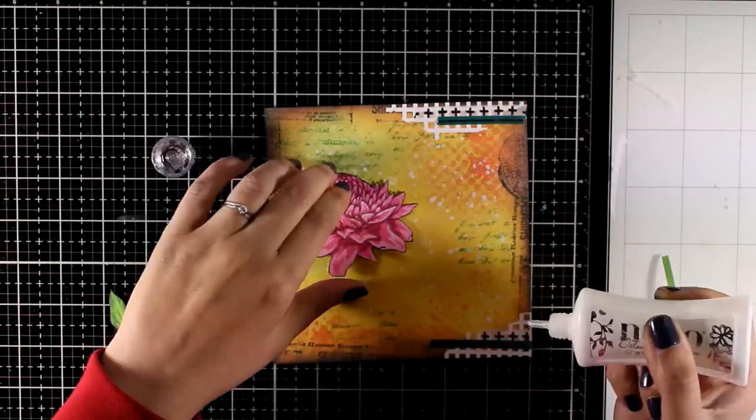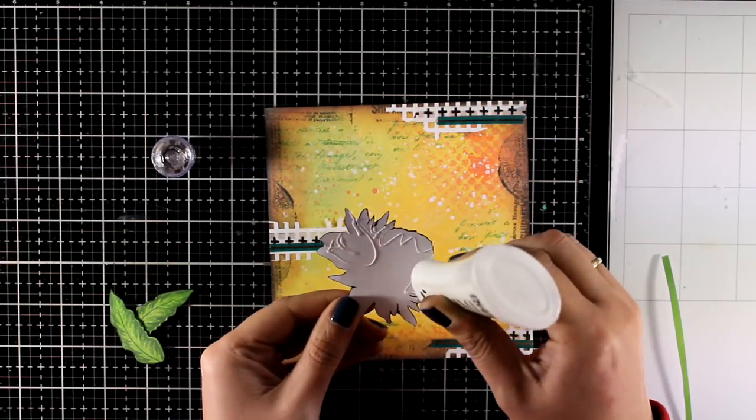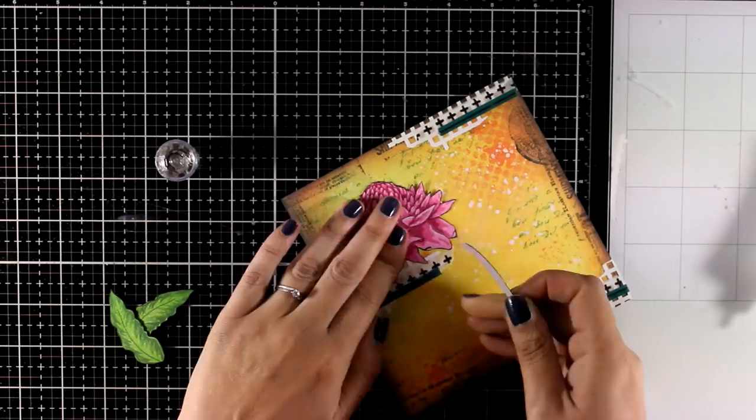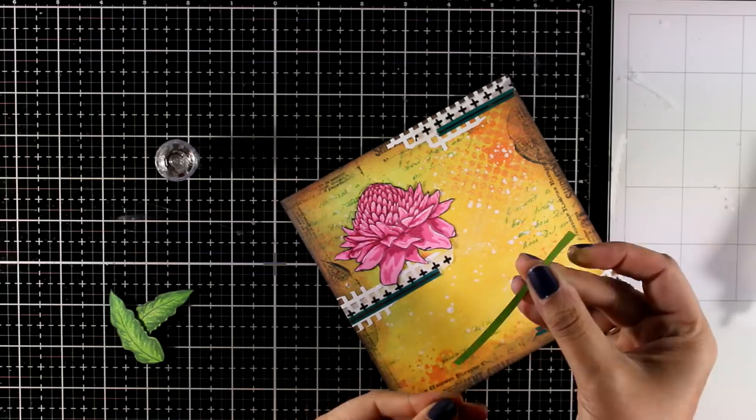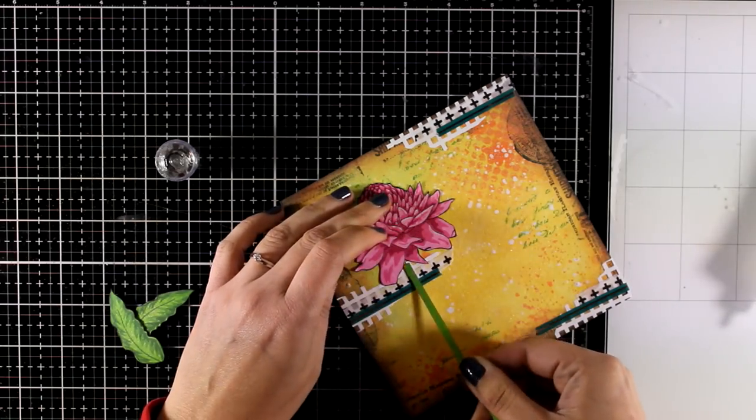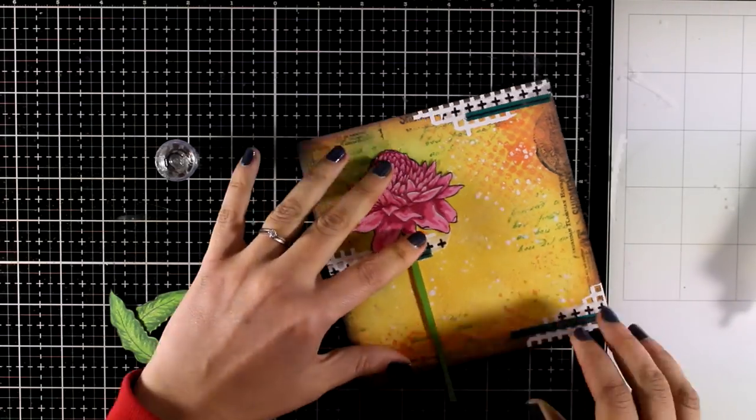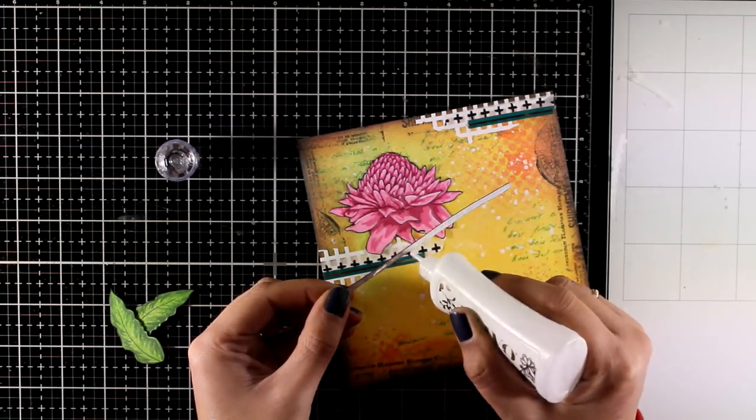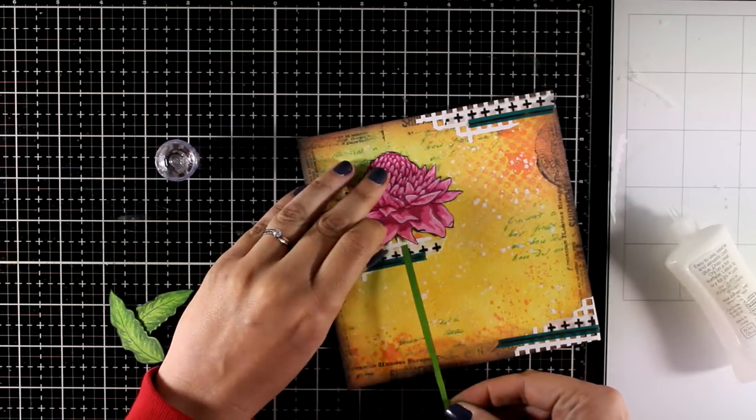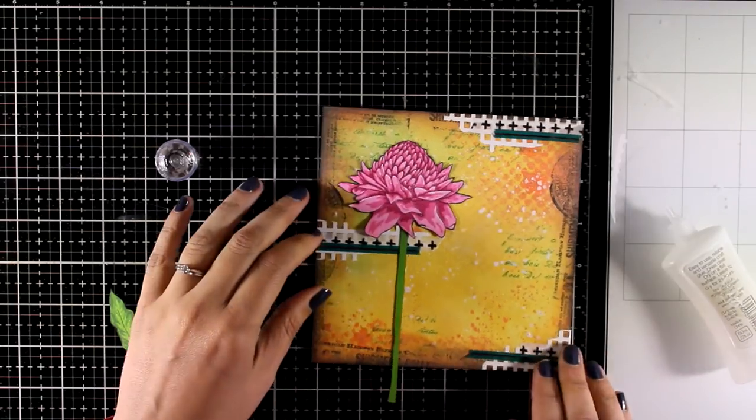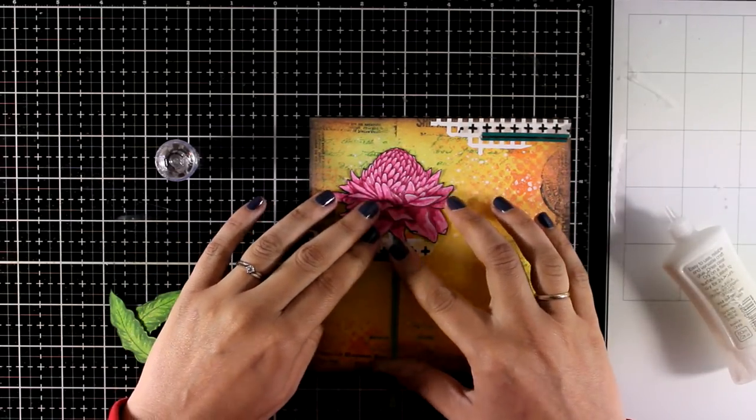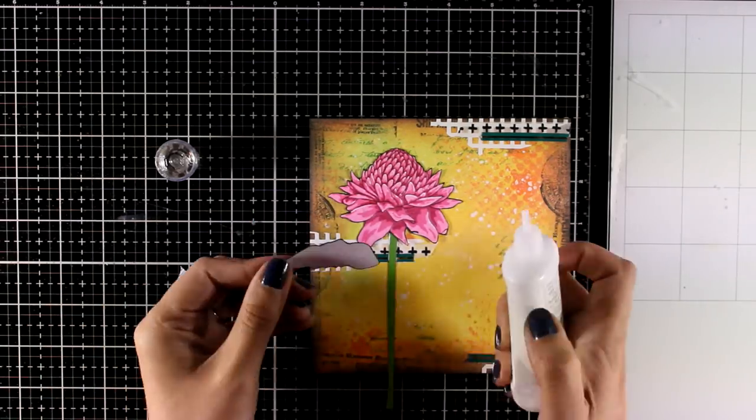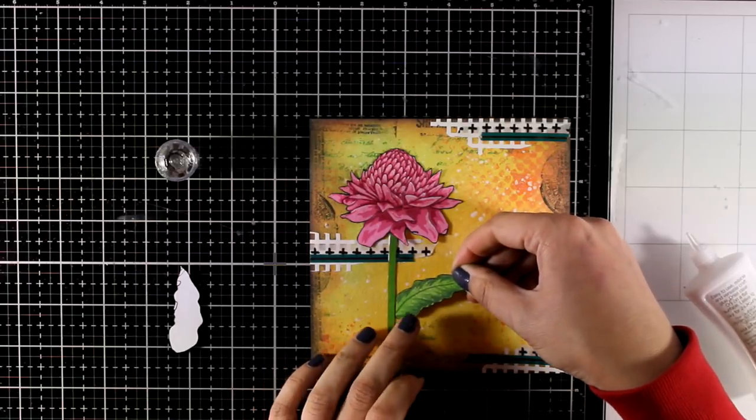Now I'm finally happy with how my background is looking, and it's time to stick everything down. I'm placing everything by using my Nuvo Deluxe glue at the back. The sprays I used at the background are water-based and will react with water or any other medium you place on top, so you need to be careful. That's why I chose my Nuvo Deluxe, being really careful not to smudge or smear the colors underneath.